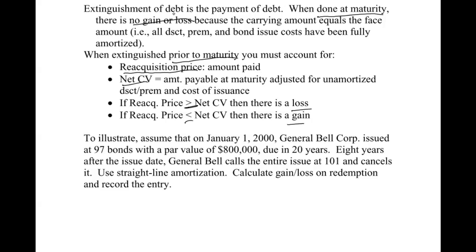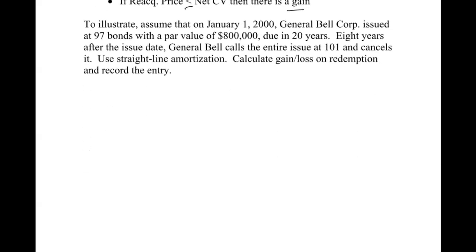Every time I do these problems, I set up a template that I use in the same format every time. So we'll do this example. A company issued $800,000 worth of bonds at 97, meaning they issued them originally for $776,000, which means there was a $24,000 discount. That was the original information back on January 1, 2000. These are due in 20 years. Eight years after the issue date, we are going to call the entire issue at 101 — that's 101% of face value, which is the reacquisition price. They use straight-line amortization. Calculate the gain or loss and record the journal entry.